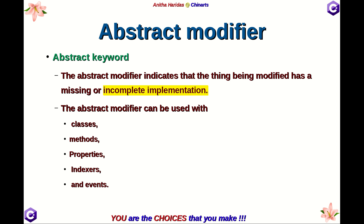The abstract modifier uses the abstract keyword and indicates that the thing being modified has a missing or incomplete implementation. Whatever has the abstract modifier has no implementation defined — the implementation must be provided by whoever uses that abstract thing. The abstract modifier can be used with a class, a method, properties and indexes, or even events.